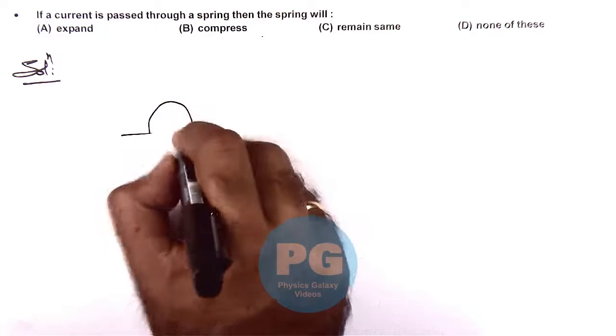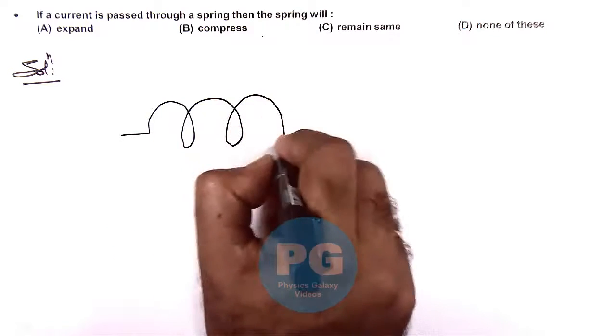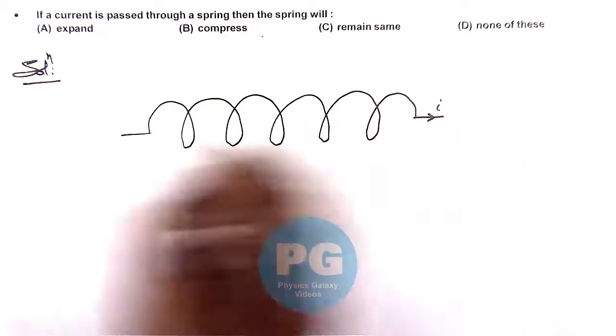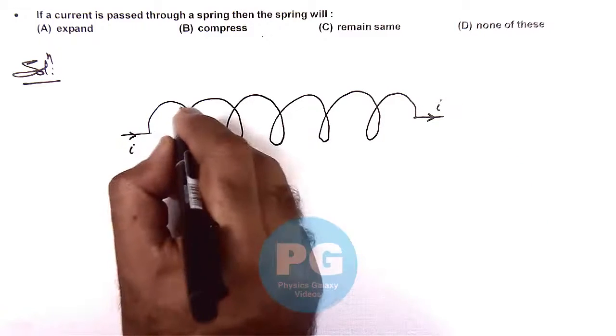So here if we talk about a spring, it is like this. And if a current is passed through the spring, here we can see...